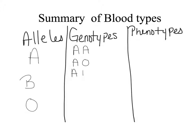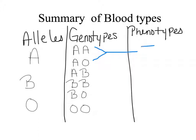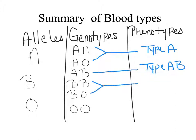Individuals can be AB, homozygous for B, heterozygous for B, or type O, which is OO. When we look at the phenotypes, there are only four phenotypes corresponding to these six genotypes. Homozygous A and heterozygous A both correspond to type A blood. AB genotype is type AB blood. Homozygous B and heterozygous B are both type B blood. And the OO genotype is type O blood.